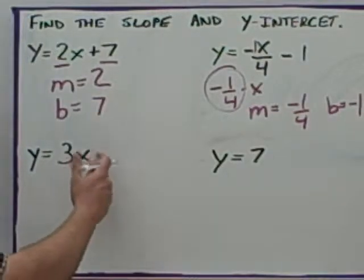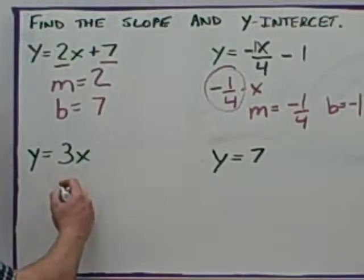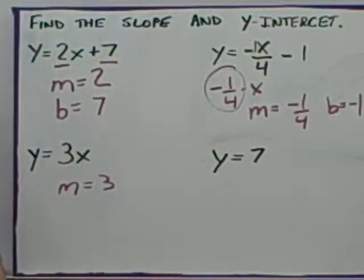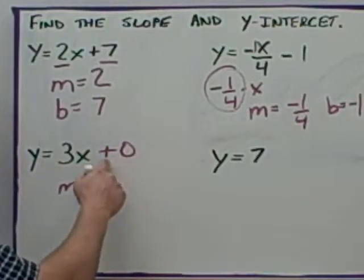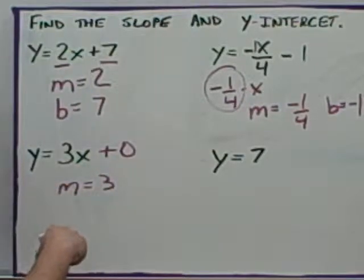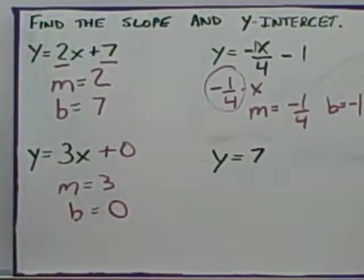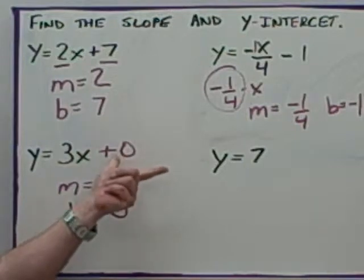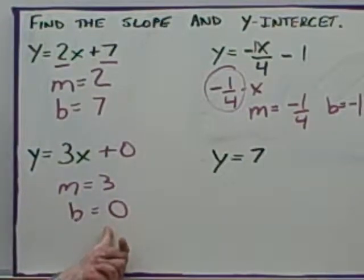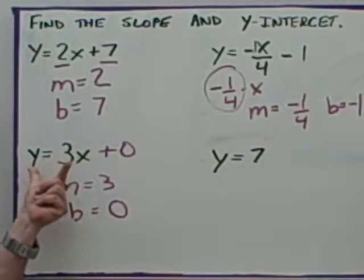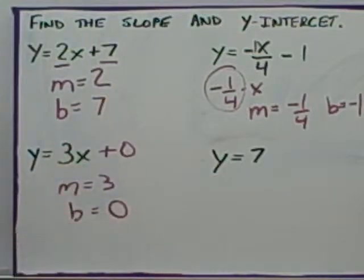Over here you'll see there is nothing being added onto the end. The slope is easy to find — it is 3, because it is 3 times x. But the y-intercept? When nothing is being added, it is like adding zero, which means the y-intercept is 0. This is known as a direct variation — any time you have y equals a number times x with nothing added or subtracted, it is called a direct variation.